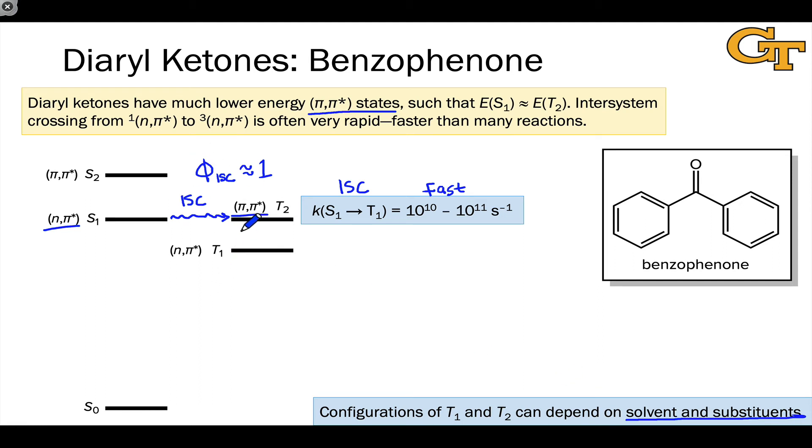In certain diaryl ketones, the π,π* state may dip lower in energy than the n,π* state. We won't go into the details here other than to say that it is worth paying attention to the fact that we can alter the relative energies of the n,π* and π,π* states by changing substituents on the aromatic rings or the solvent.